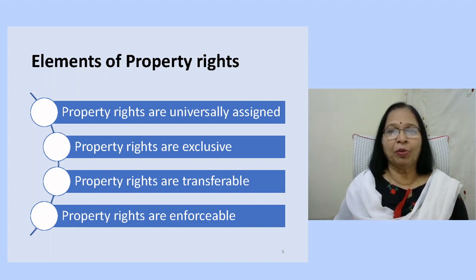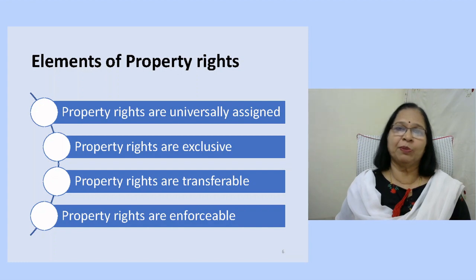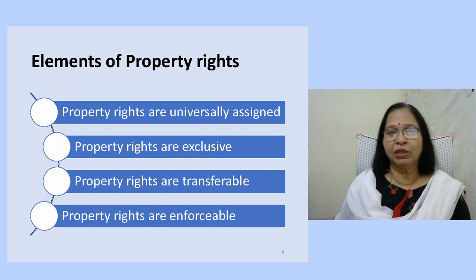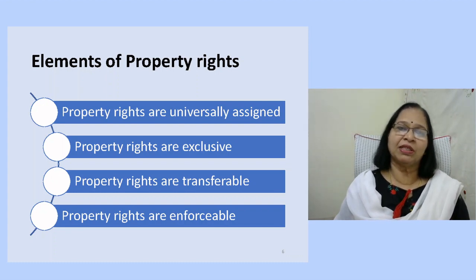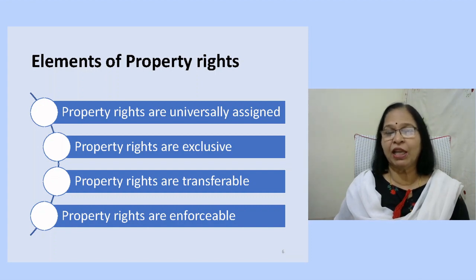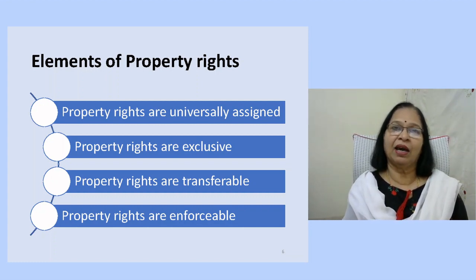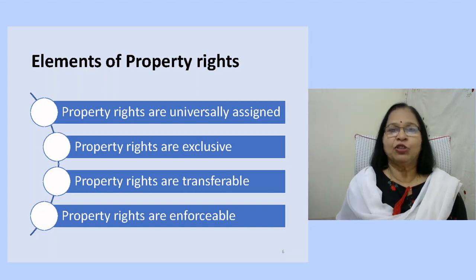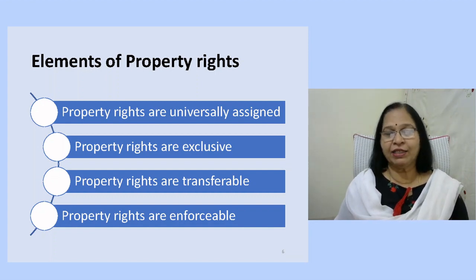The third characteristic is that property rights are universally assigned, providing access only to authorized agents to use all aspects of a property. If land is private property, then the tree on the land and the fruits that grow on it are all assigned to the owner only. In the case of environmental resources this is not possible — the fish in the sea is available to anyone who can access it. Finally, property rights are enforceable by governments through an institutional and legal framework.